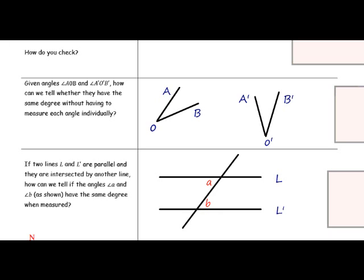And if two lines L and L prime are parallel, and they are intersected by another line, how can we tell if the angle A and B, as shown, have the same degree when measured?